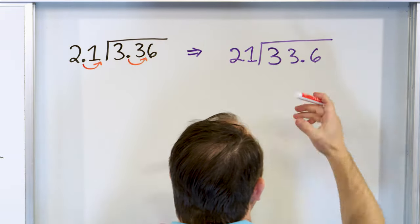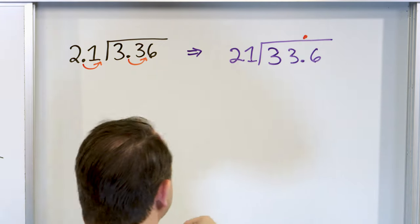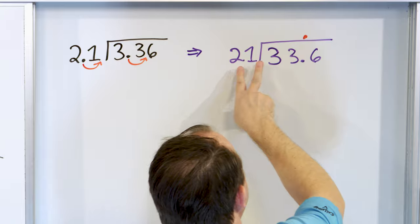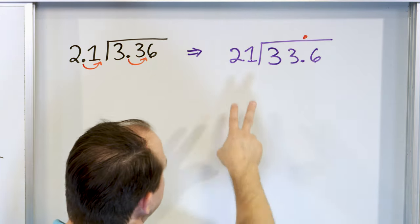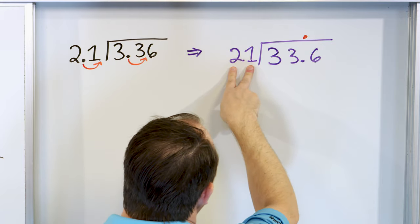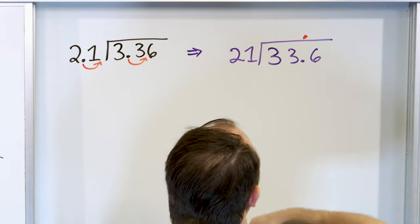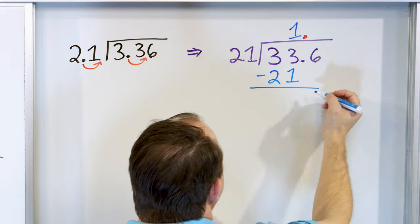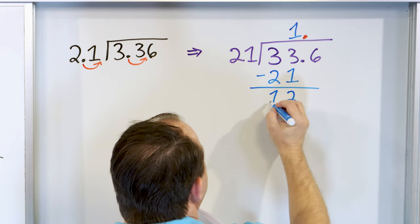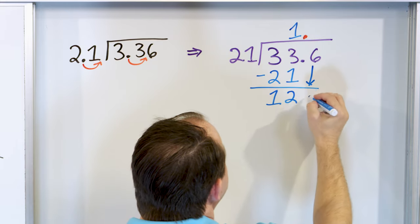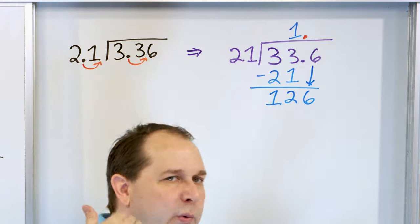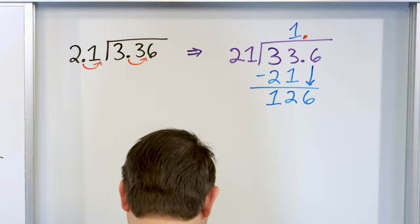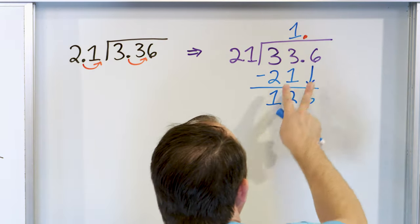We look at the decimal point and float it up into the final answer. How many times can 21 go into 3? Can't. How many times can 21 go into 33? It can only go once — you can think of it as close to 20 times 2 would be 40, which is too much, so it can only go one time. One times 21 is 21, subtract. 3 minus 1 is 2, and 3 minus 2 is 1. After subtracting, grab the next digit — a 6 — and we're looking for a remainder of zero. So we have 126 down here. 21 times something is 126.